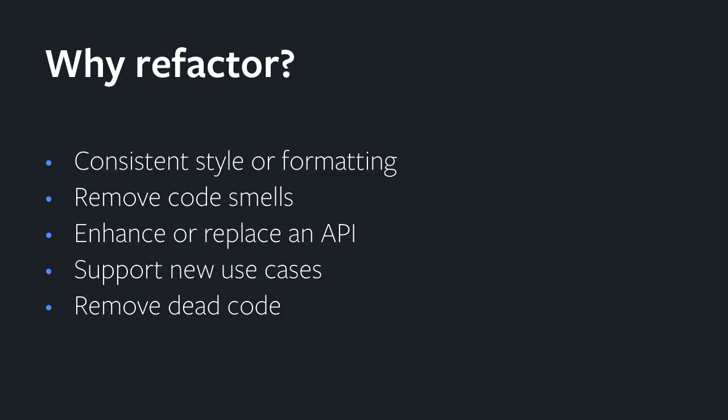Some of the cases where you might want to do this would be enforcing some sort of consistent style or formatting across your code base, whether you're fighting the tabs or spaces war or instituting something like the black formatter. It could also be cases of removing code smells like named lambdas and replacing them with actual functions, or just removal of dead code and making sure that all the references to it are removed from the rest of the code base.